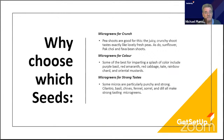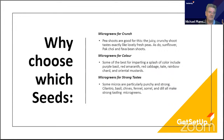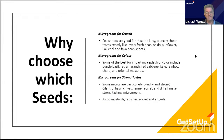You have to experiment and find the taste you like. Some are particularly punchy and strong. If you're looking for strong taste, look at the herbs grown into microgreens — cilantro, basil, chives, fennel, sorrel, and dill all have strong tastes. You must taste them to decide. Radishes also have quite a strong taste — a recognizable radish flavor.